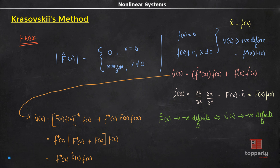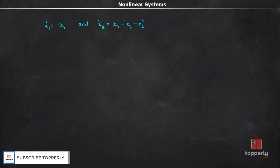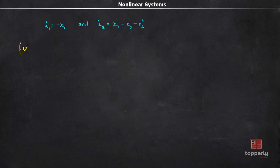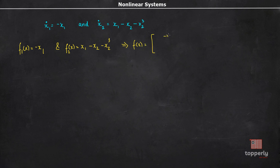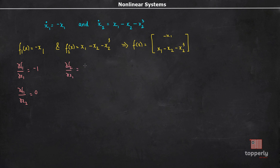Now let's see an example where we use Krasovsky's theorem to determine the stability of a system. The system is given by ẋ₁ = -x₁ and ẋ₂ = x₁ - x₂³. So, we write f₁(x) = -x₁ and f₂(x) = x₁ - x₂³, which gives us f(x) = [-x₁, x₁ - x₂³]ᵀ. To find the Jacobian matrix: ∂f₁/∂x₁ = -1, ∂f₁/∂x₂ = 0, ∂f₂/∂x₁ = 1, ∂f₂/∂x₂ = -1 - 3x₂².